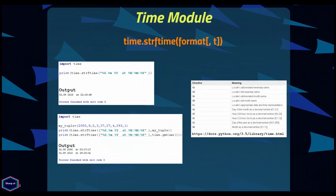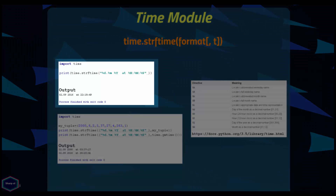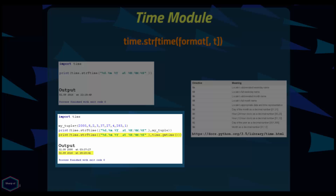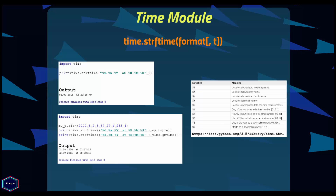The strftime() function converts a time tuple to a string according to a format specification. When the time tuple is not provided, the current time returned by localtime() is used. In this example I print the actual date and time using format codes — for all format codes you can read the official Python documentation. I also show examples passing gmtime() as the second argument, as well as a custom time tuple declared above. In summary, strftime() converts the time tuple (second argument) to a string according to the format specification.